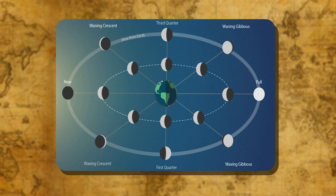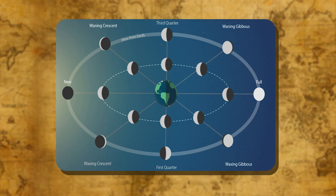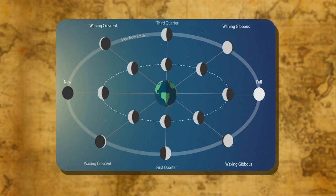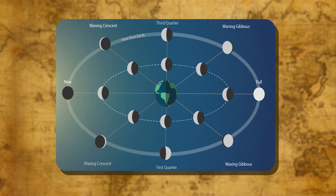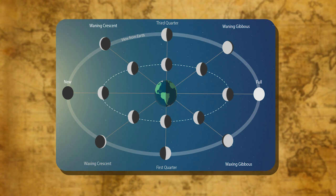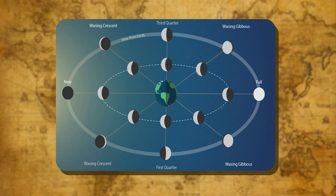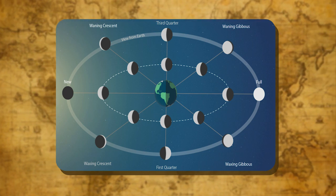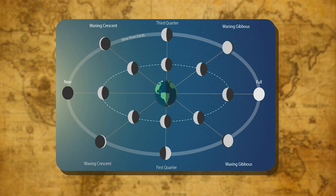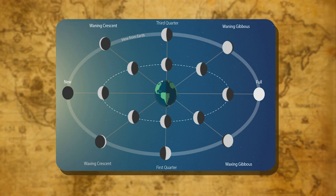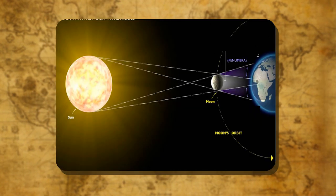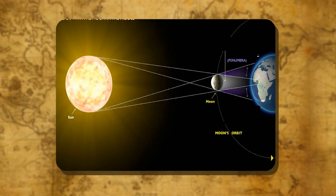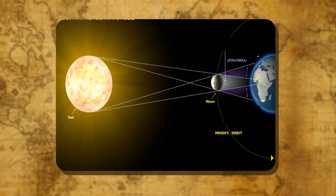Phases of the moon: The moon's appearance changes as it moves around the Earth. These changing shapes, or changes in the moon's visible shape, are known as the phases of the moon. New moon and full moon are the most common phases.